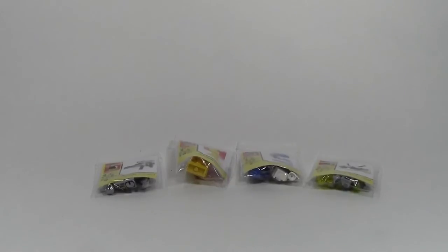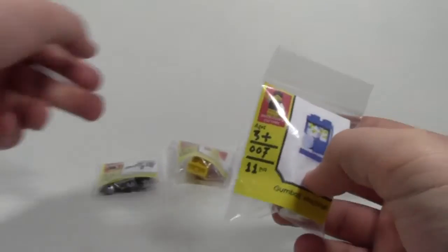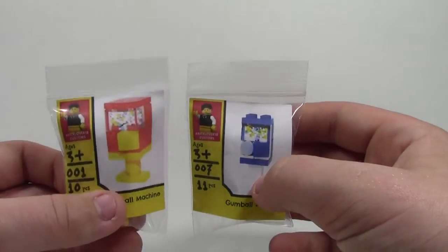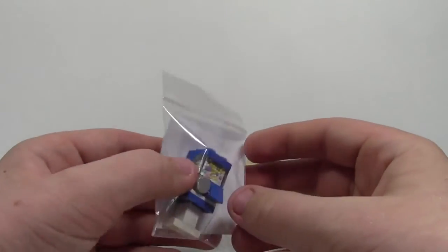Set number 007. It's a blue gumball machine and it's actually different than the red gumball machine. So there are differences to it. This one has 10 pieces and this one has 11 pieces. Plus all the sprinkles are extra.